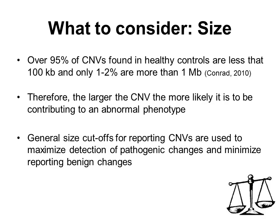The size of a copy number variant can be used as a general screen, with larger CNVs being more likely to contribute to an abnormal clinical phenotype. This is part of the rationale for labs to use a size-based reporting cutoff. Labs often will not report CNVs under a certain size cutoff, even though they are reliably detectable, because this minimizes the number of benign or likely benign results in the patient's report. However, this use of size is dependent on the gene content of the region and the actual dosage or copy number state.